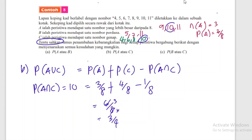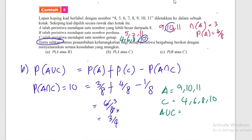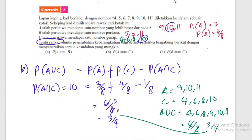Kita buktikan: A union C = {4, 6, 8, 9, 10, 11} - ada 6 unsur. Kebarangkalian = 6/8 = 3/4. Sama dengan formula - terbukti. Settle soalan B.